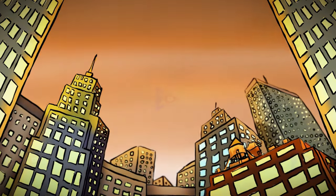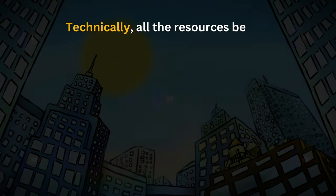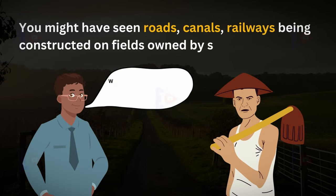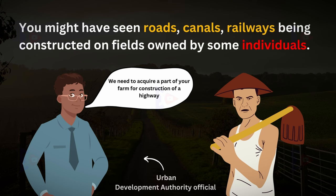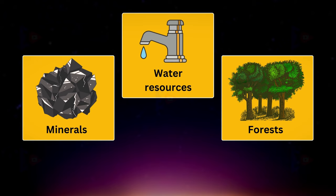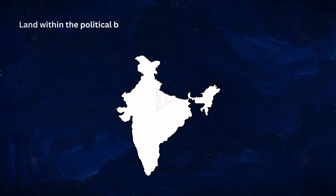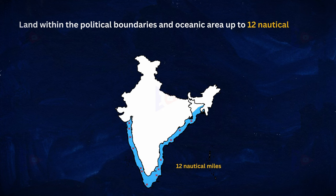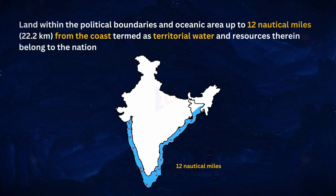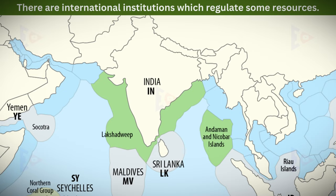National resources: technically all resources belong to the nation. The country has the legal power to acquire even private property for public good, as seen when roads, canals and railways are constructed on fields owned by individuals. All minerals, water resources, forests, wildlife, land within political boundaries and the oceanic area up to 12 nautical miles (22.2 km) from the coast — termed as territorial water — and resources therein belong to the nation.